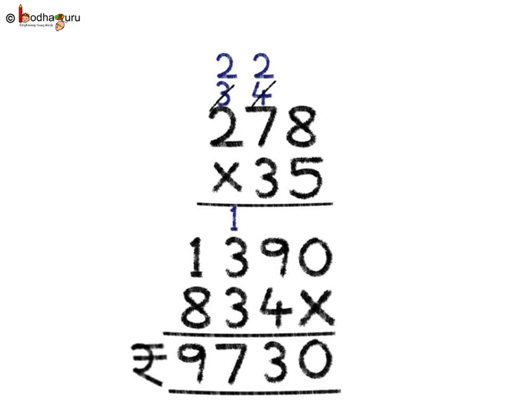Next we multiply by 30, that is by 3. First we need to put a cross. Then 3 eights are 24, and 2 is the carry forward. Next, 3 sevens are 21, plus the carry over 2, gives 23, so 2 is the carry forward. Next, 3 twos are 6, plus the carry over 2 is 8. So we write 8. Now we need to add the 2 rows.